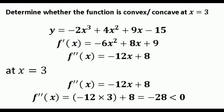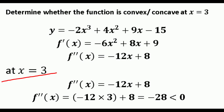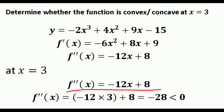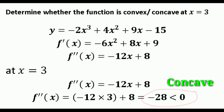To determine whether the function is convex or concave we consider the sign of the second derivative. f''(x) = -12x + 8. Substituting x = 3: f''(3) = -12(3) + 8 = -36 + 8 = -28. Since -28 < 0, the function is said to be concave at x = 3.